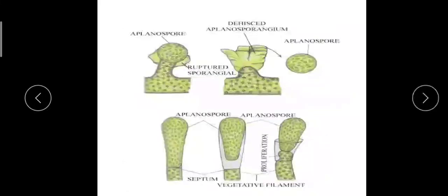Another type of asexual reproduction is through aplanospores, which are non-motile spores, unlike the motile zoospores. This type of reproduction mostly occurs in terrestrial species of Vaucheria under unfavorable conditions, or in aquatic species during drought conditions.